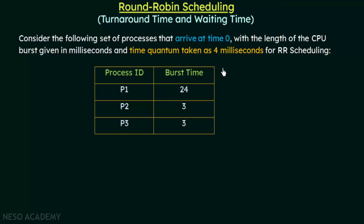In this example the time quantum is 4 milliseconds. That means each process will be allowed to execute for 4 milliseconds, after which the CPU will be given to the next process in the queue. The first step in calculating turnaround time and waiting time for any scheduling algorithm is to form the Gantt chart, and after that we can calculate the turnaround time and waiting time.